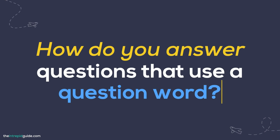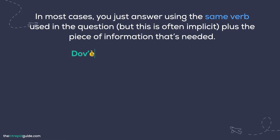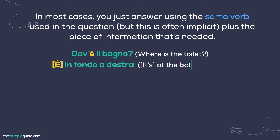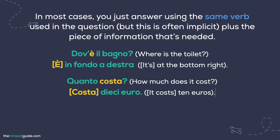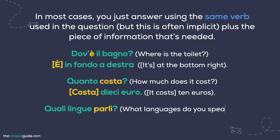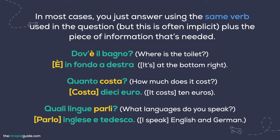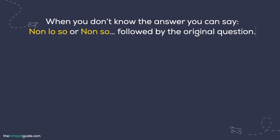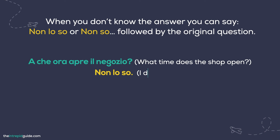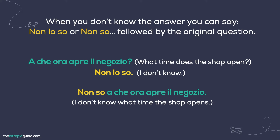How do you answer questions that use a question word in Italian? In most cases, you just answer using the same verb used in the question — but this is often implicit — plus the piece of information that's needed. For example: Dov'è il bagno? Where is the toilet? È in fondo a destra. It's at the bottom right. Quanto costa? How much does it cost? Costa dieci euro. It costs ten euros. Quali lingue parli? What languages do you speak? Parlo inglese e tedesco. I speak English and German. When you don't know the answer, you can say Non lo so or Non so, followed by the original question. For example: A che ora apre il negozio? What time does the shop open? Non lo so. I don't know. Non so a che ora apre il negozio. I don't know what time the shop opens.